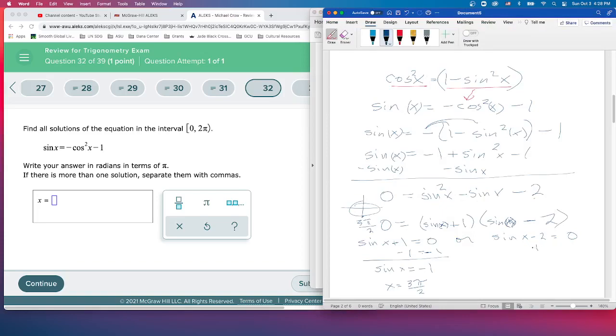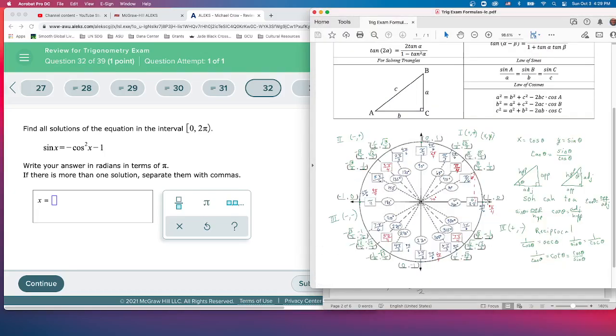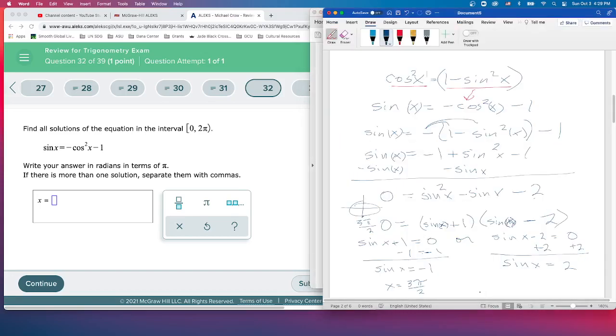Over here, we add two to both sides and we get that sine x equals two. Now let's look that up on the unit circle. Where is the y value equal to two? Well here it's equal to zero. Here it's equal to one. But then it gets smaller again and then back down to zero. There is no place on the unit circle where sine is going to be two. It's impossible. It just does not exist. There is no solution.